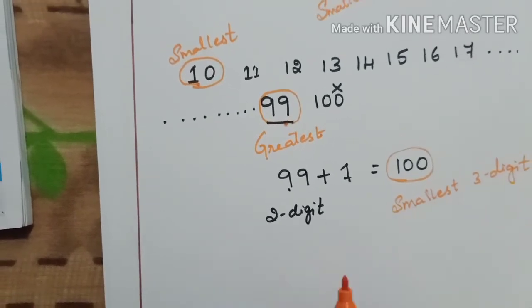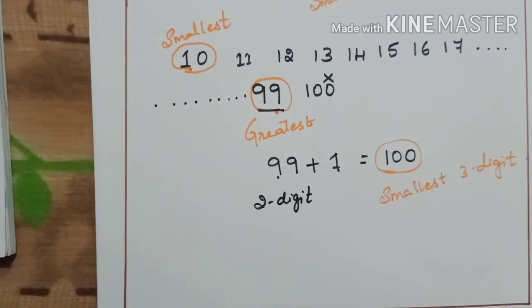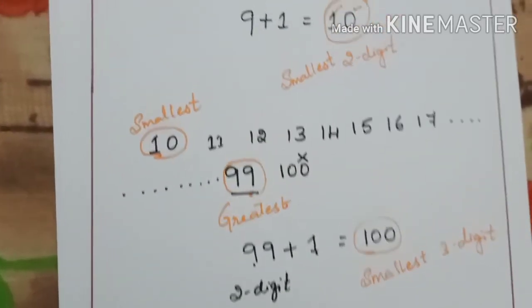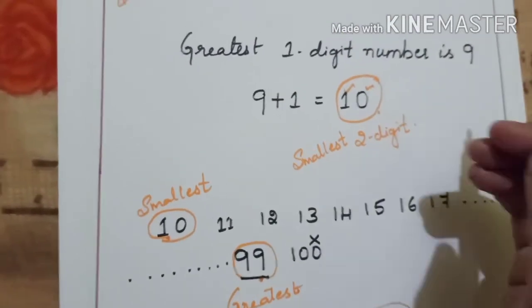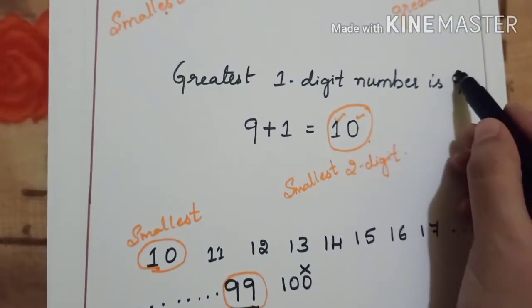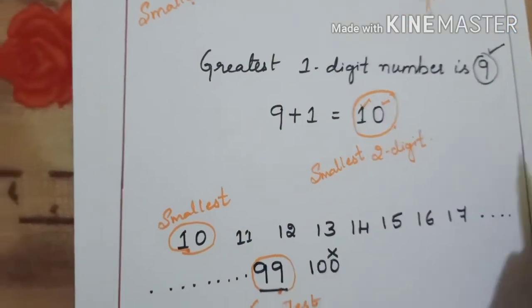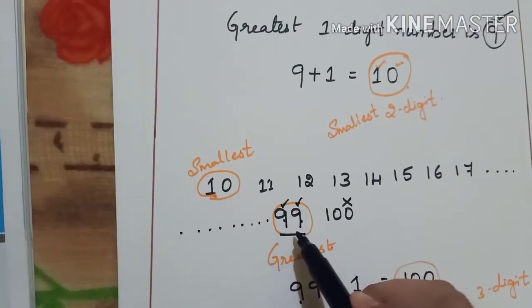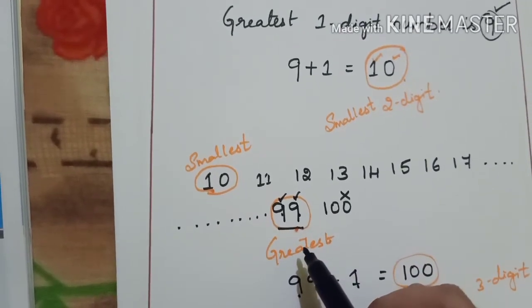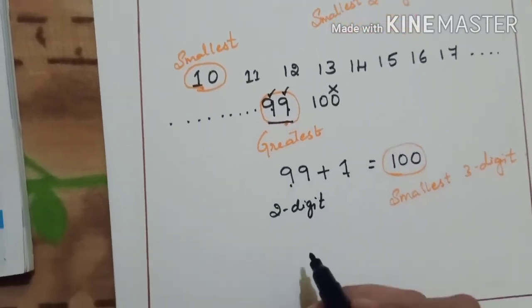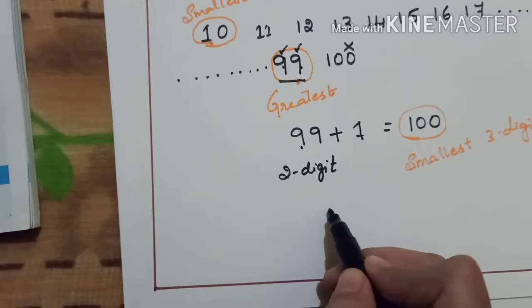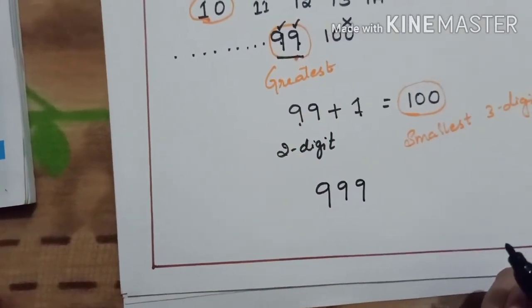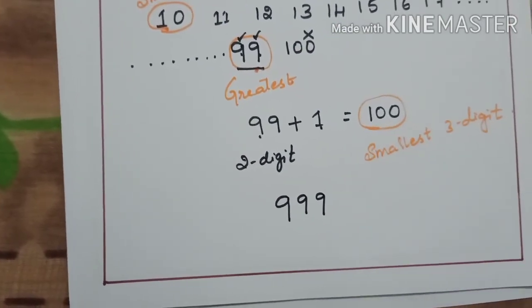Likewise, if we consider the greatest 3-digit number, you can follow a similar pattern. 9 is the greatest 1-digit number. 99 — writing 9 two times — is the greatest 2-digit number. Then the greatest 3-digit number will be 999. Simple — you just have to write 9 three times.